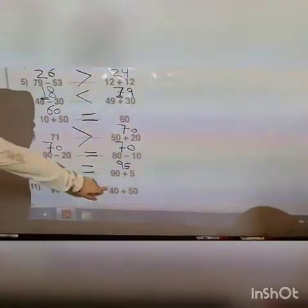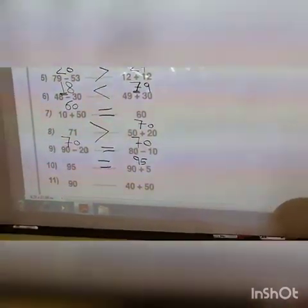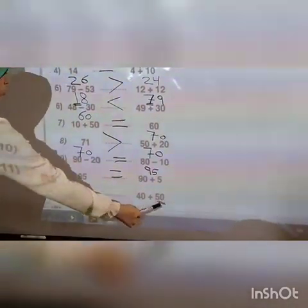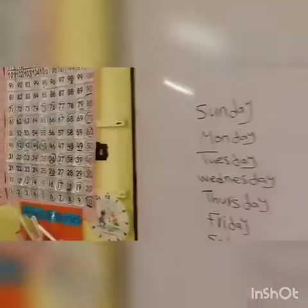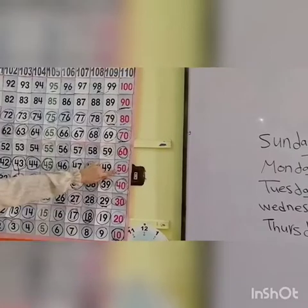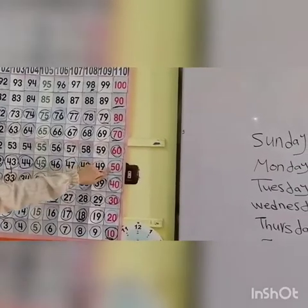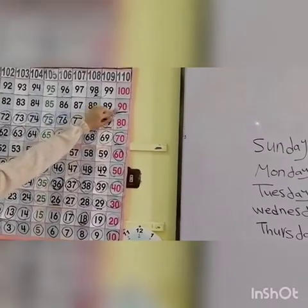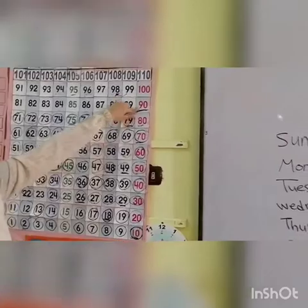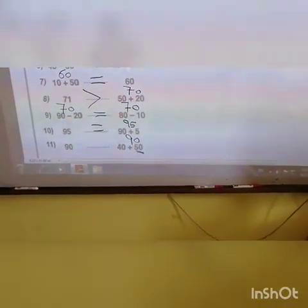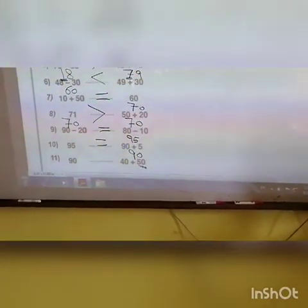Number eleven: ninety and forty plus fifty. The greatest number is fifty, so stand on fifty. Fifty plus forty — four in the tens, go four steps up: one, two, three, four. Zero in the units, so still standing on ninety. Here we have ninety and also ninety — put equal.